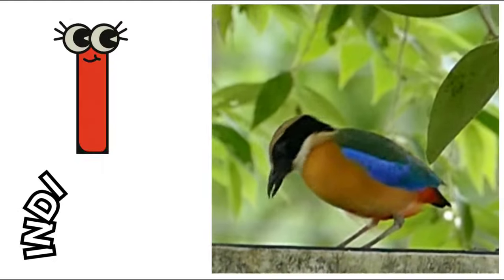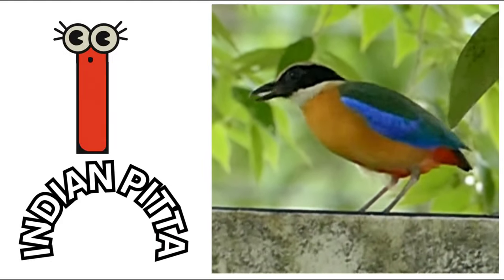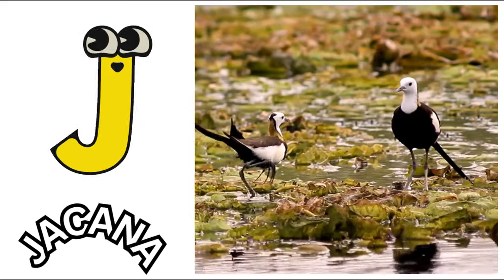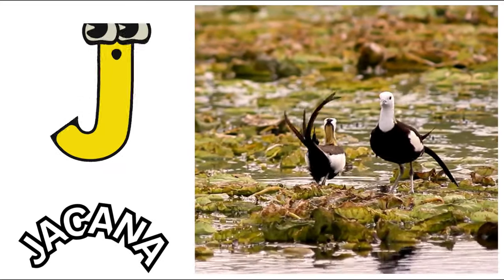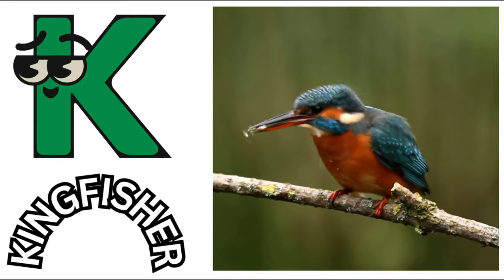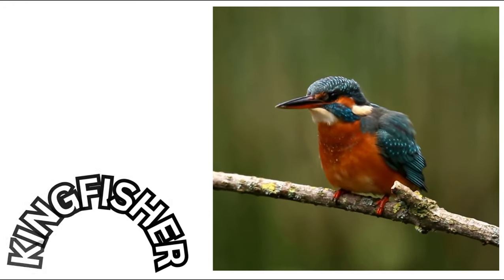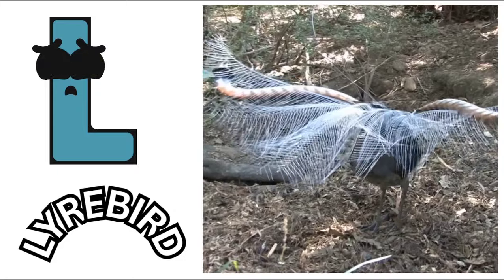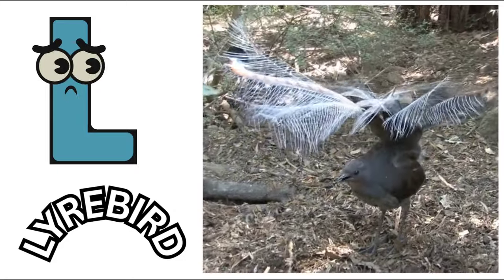I is for Indian Pitta. J is for Jacana. K is for Kingfisher. L is for Lyrebird.